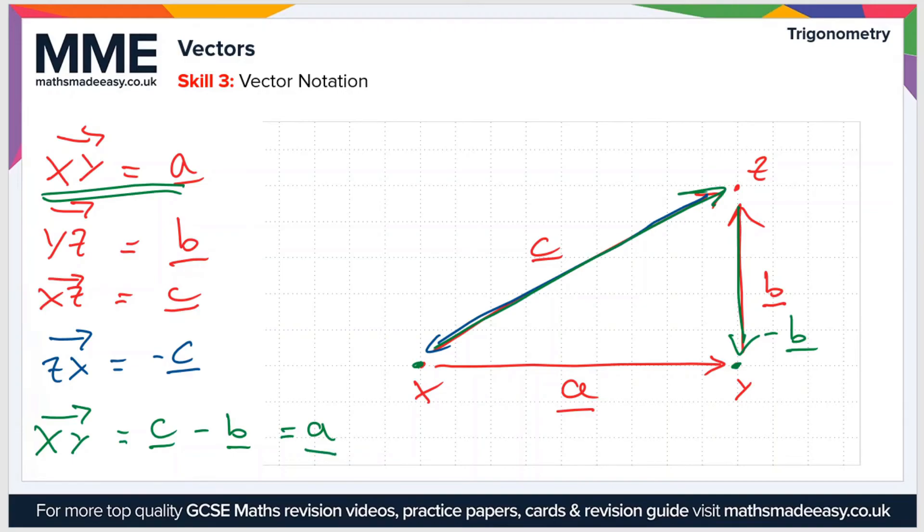To summarize, you can express the directions between any two points in terms of the vectors A, B, and C.